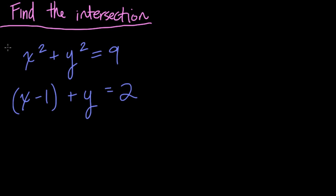Okay, so here we need to find the intersection of these two equations. And you might recognize this first equation right here as the equation of a circle, x squared plus y squared equals 9. And this 9 here, that's the radius squared, so that means the radius equals 3.